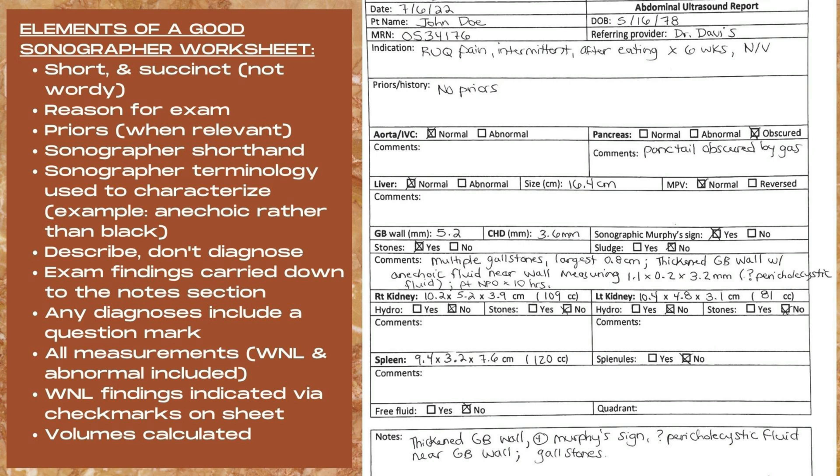For the diagnosis, I'm questioning whether or not it's pericholecystic fluid next to the gallbladder wall, even though that's the most likely diagnosis. I'm also including a piece of information that's very helpful to the radiologist: since this gallbladder wall is thickened, it's crucial for the radiologist to know when the patient last ate. At the end of the exam, I carry down that relevant information into the notes section — thickened gallbladder wall, positive Murphy sign, questioned pericholecystic fluid near the gallbladder wall, and gallstones.